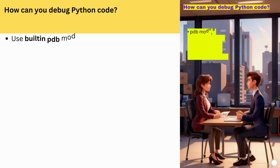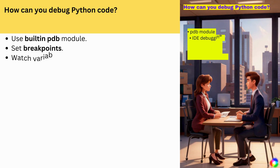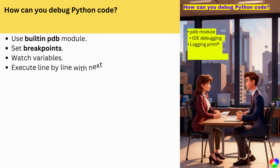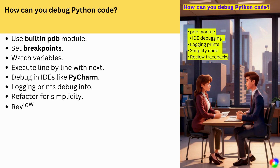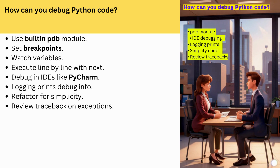How can you debug Python code? Use the built-in pdb module. Set breakpoints, watch variables, and execute line by line with next. Debug in IDEs like PyCharm. Logging prints debug info. Refactor for simplicity. Review traceback on exceptions.